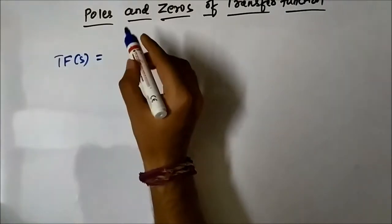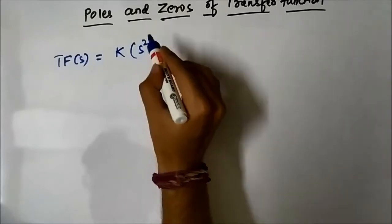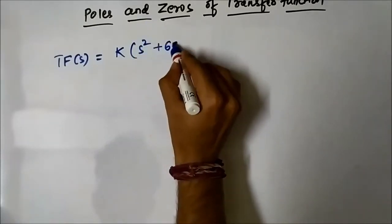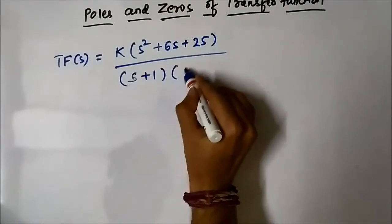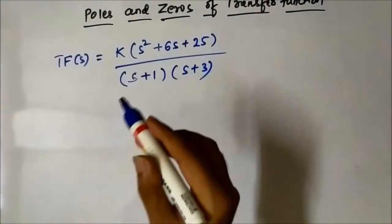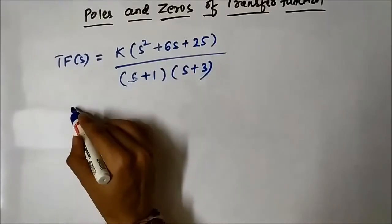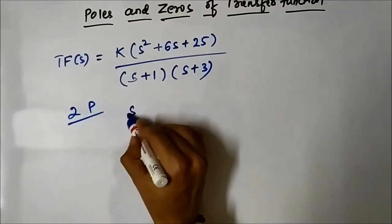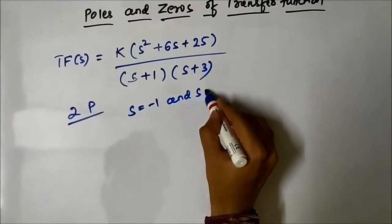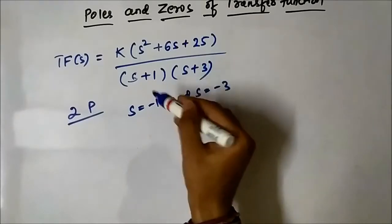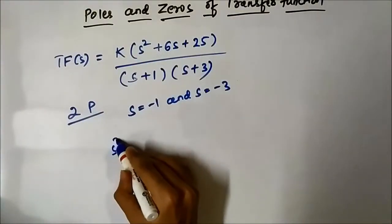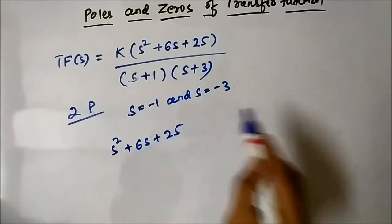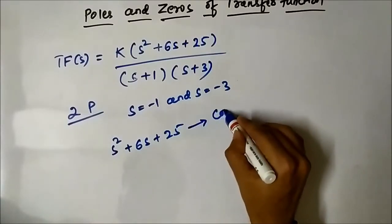Now suppose you come across another transfer function: k times (s²+6s+25) divided by (s+1)(s+3). Here there are two simple real poles at s = -1 and s = -3. If we substitute s = -1 or s = -3, the denominator becomes zero and the transfer function tends to infinity.